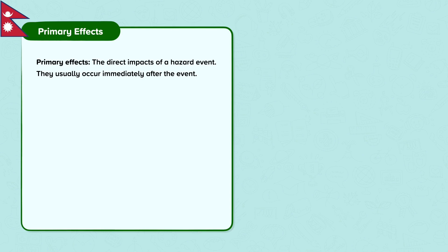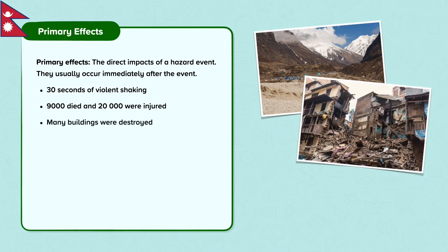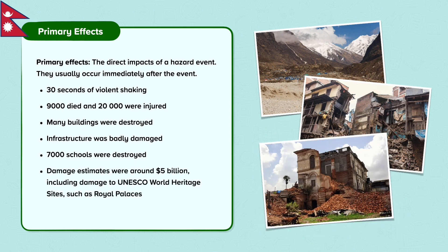Primary effects are the direct impacts of a hazard event; they usually occur immediately after the event. In the Gorkha earthquake, these included 30 seconds of violent shaking, felt as a result of the shallow focus. 9,000 people died and 20,000 were injured, largely from falling debris and damaged buildings. Many buildings were destroyed, including homes. Infrastructure was badly damaged, including electricity and phone lines. 7,000 schools were destroyed, affecting the education of an estimated 1 million Nepalese children. Damage estimates were around 5 billion dollars, including damage to UNESCO World Heritage sites such as Royal Palaces.